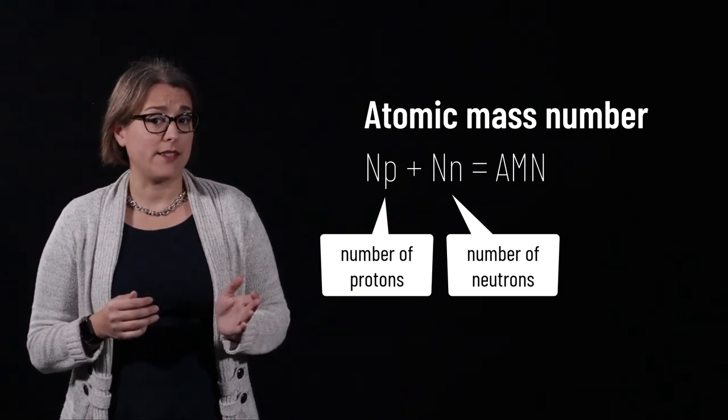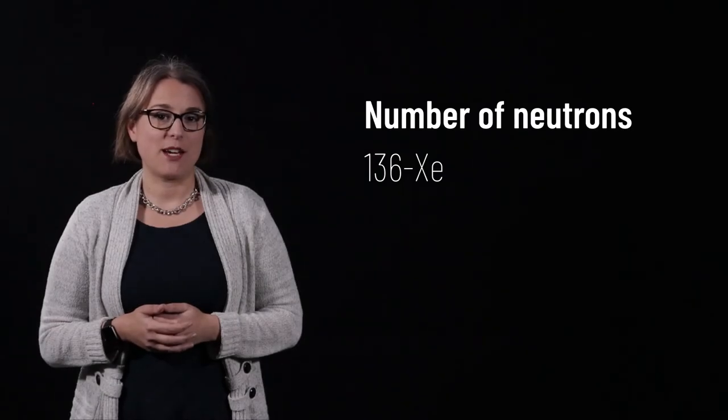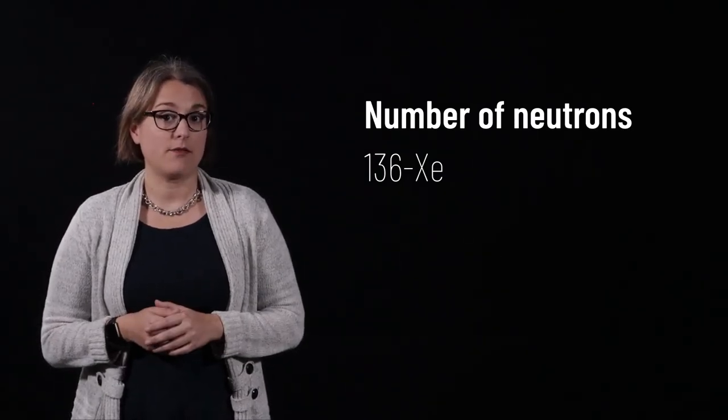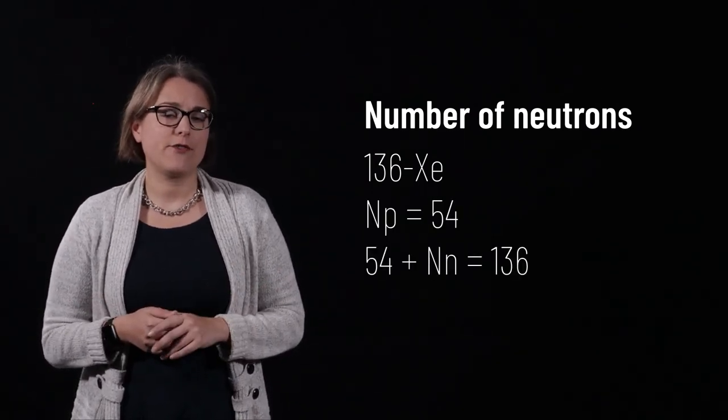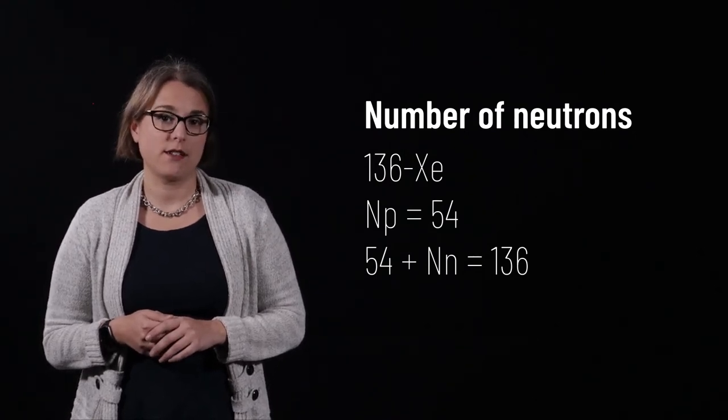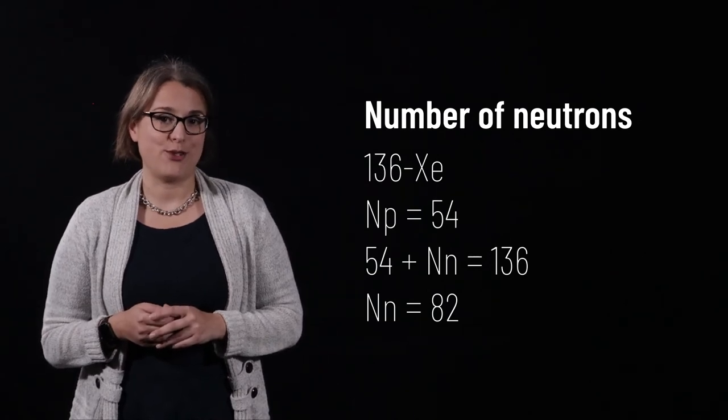Remember that the number of protons is given by the atomic number. Let's look at another example. 136 xenon is an isotope of xenon. Xenon has 54 protons. 54 protons plus the number of neutrons in this isotope equals 136. This particular isotope of xenon therefore has 82 neutrons.